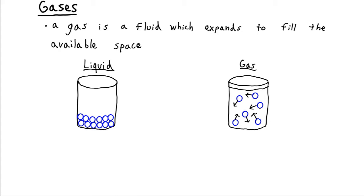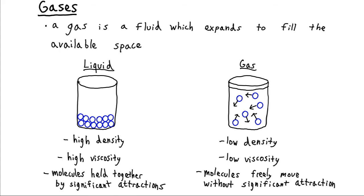Some of the distinctions between their different properties: liquids tend to be much higher density compared to gases. In fact, a gas will tend to occupy about a thousand times the volume of a liquid under atmospheric pressures. So if you take a liter of water and convert it into steam, you expect about a thousand liters of steam to be generated.